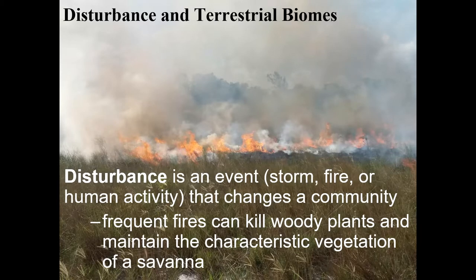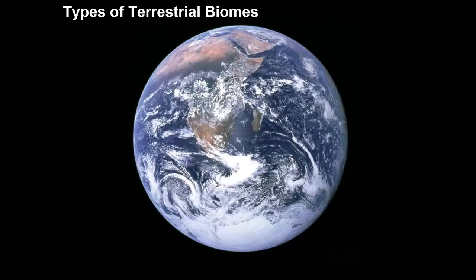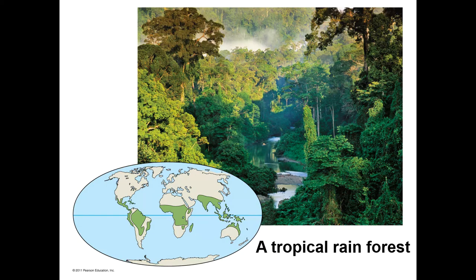Disturbance in terrestrial biomes refers to an event — often human activity, but also fires or storms — that changes the community. For example, some grasslands have frequent regular fires, and when humans stop those fires, the plants and overall biome change. You should get the gist of different terrestrial biomes without needing to memorize one compared to another.